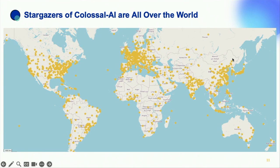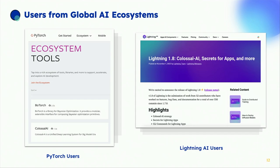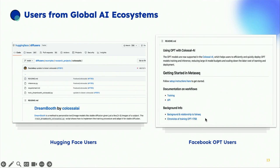We've also had a lot of adoption from other frameworks. PyTorch, Lightning AI, Hugging Face, and Facebook OPT all link to Colossal AI and recommend it on their webpages.